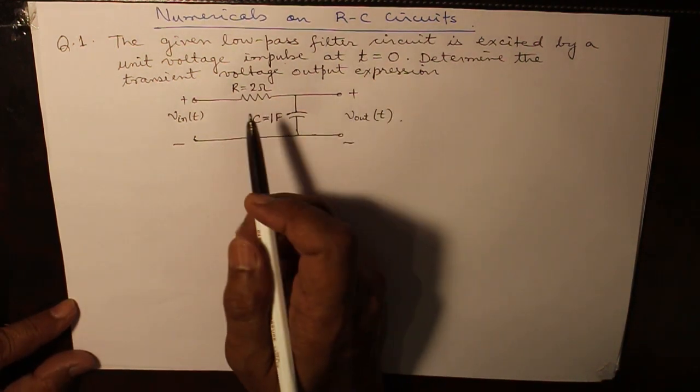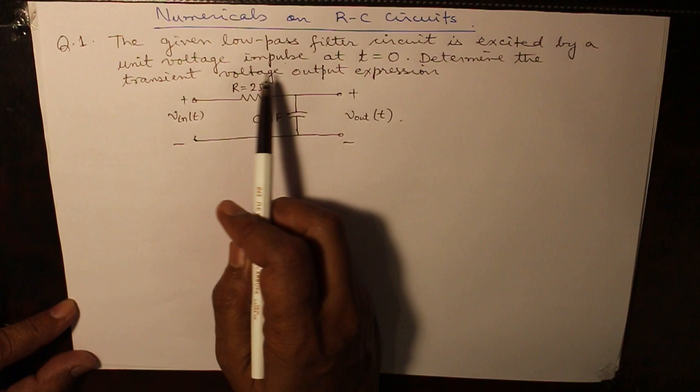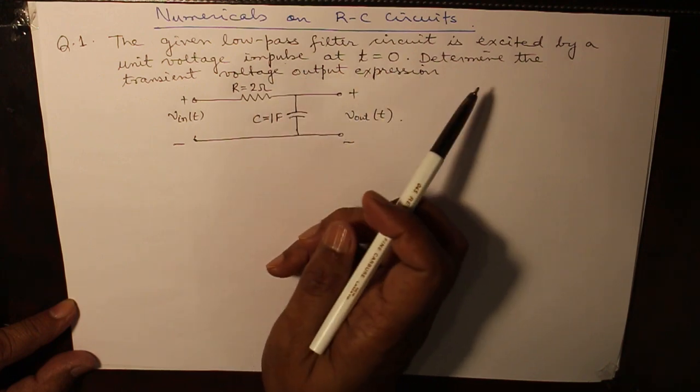Let's start numericals on RC circuit. This is a given low-pass filter circuit which is excited by a unit voltage impulse at t equals zero.